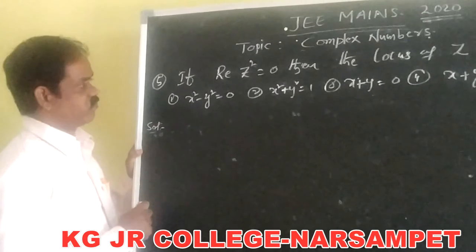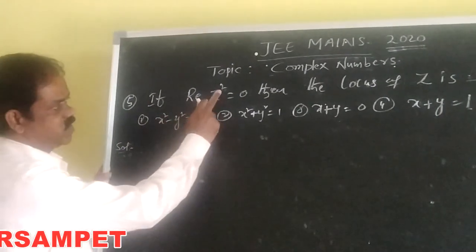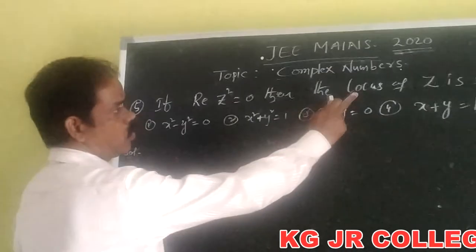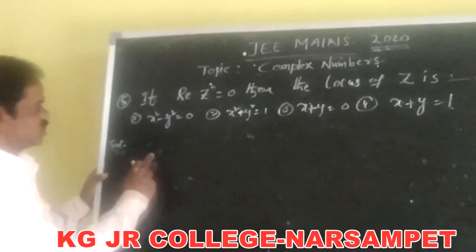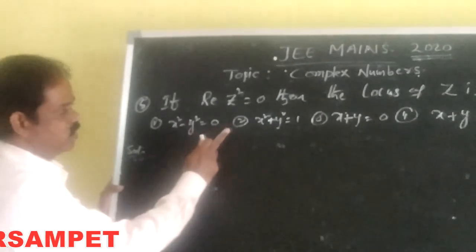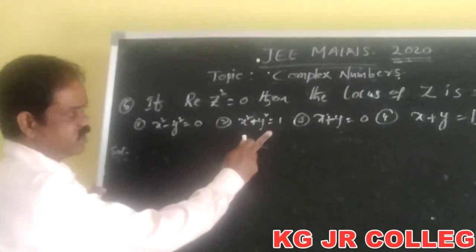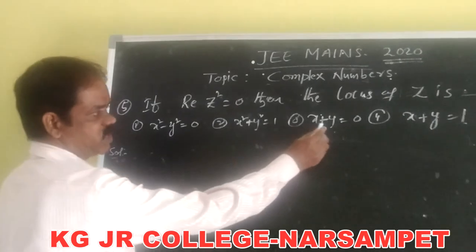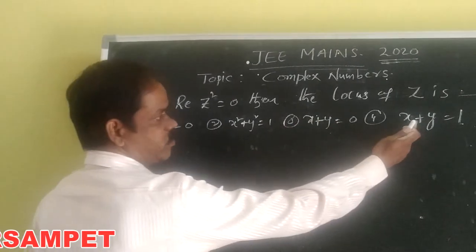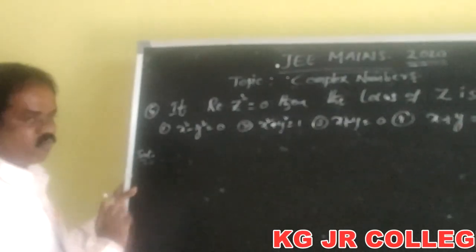Fifth problem: if the real part of z squared equals 0, then the locus of z is — first option: x squared minus y squared equals 0; second option: x squared plus y squared equals 1; third option: x plus y equals 0; fourth option: x plus y equals 1.